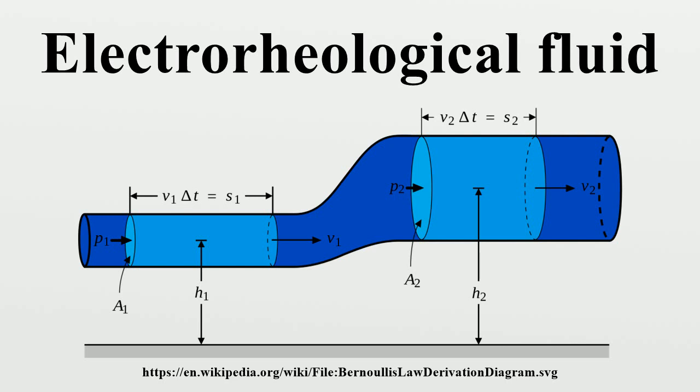When activated, an ER fluid behaves as a Bingham plastic, with a yield point which is determined by the electric field's strength. After the yield point is reached, the fluid shears as a fluid, i.e., the incremental shear stress is proportional to the rate of shear. Hence the resistance to motion of the fluid can be controlled by adjusting the applied electric field.